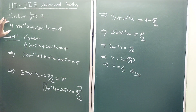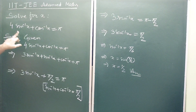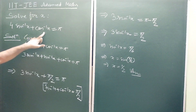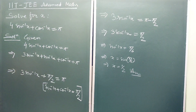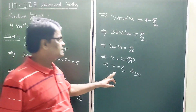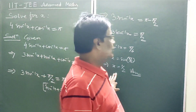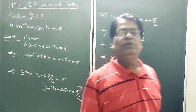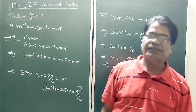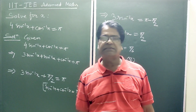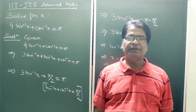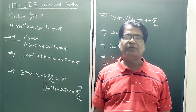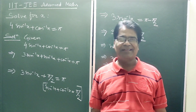So solving the given equation 4·sin⁻¹(x) + cos⁻¹(x) is equal to π, we get the value of x is equal to 1/2. With this, the topic for this class is completed. I shall meet you soon with a new topic. Till then, goodbye.